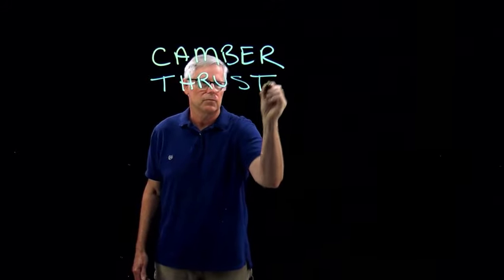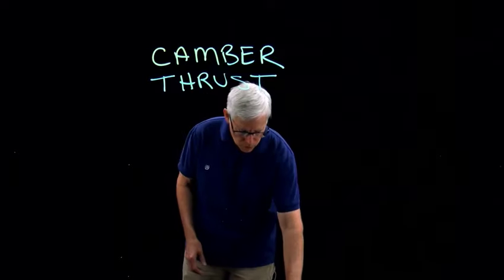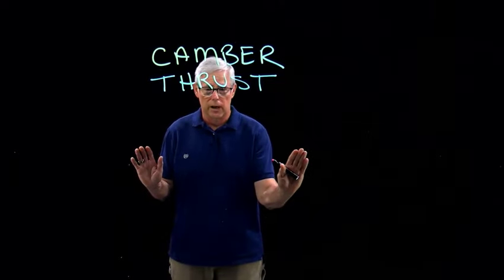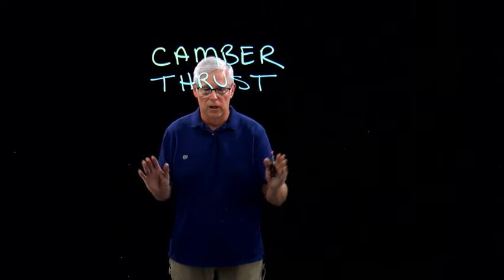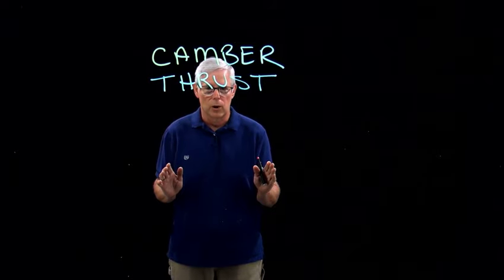Camber thrust relates to the curvature of the tires. When you're riding down the road on a motorcycle and you push right on the right hand grip, the motorcycle makes a perfect right hand turn. This is counterintuitive, but here's how it works.